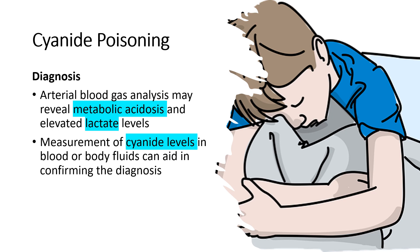The diagnosis of cyanide intoxication includes: arterial blood gas analysis, which may reveal metabolic acidosis and elevated lactate levels; and measurement of cyanide levels in blood or body fluids, which can aid in confirming the diagnosis.